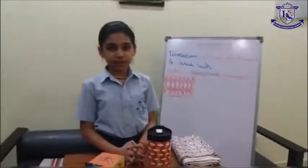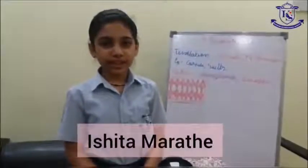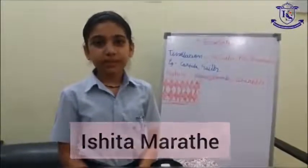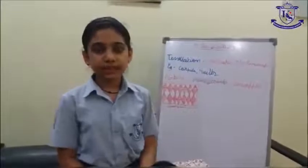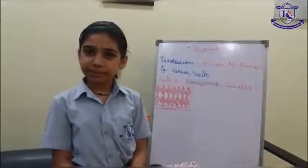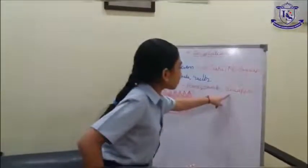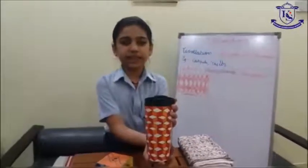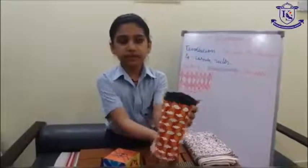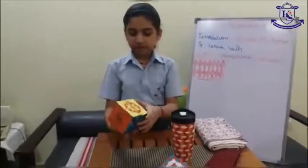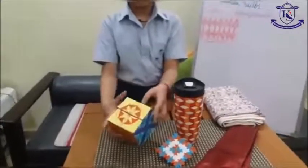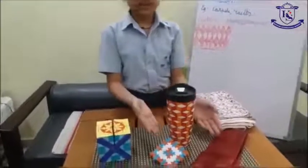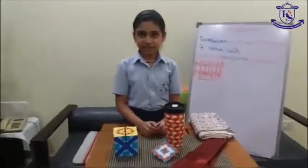Namaskar and hi everyone. I am Ishita. Tessellations are designs which have no gaps and overlaps. Some examples are carpets and quilts. Did you know that there are some tessellations in nature too? Some examples are honeycomb and pineapple. I have made a cube 3D design on this travel mug, and this is an infinity cube — it is also a nice example of tessellation with many tessellations on it. These are good examples used for decorative geometry tiling. Thank you.